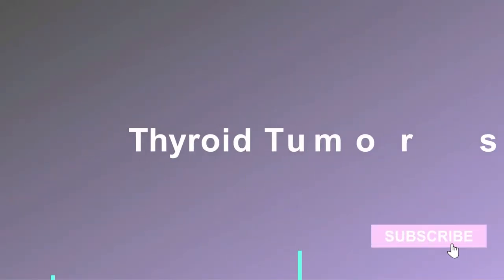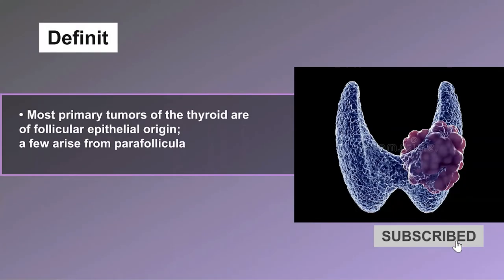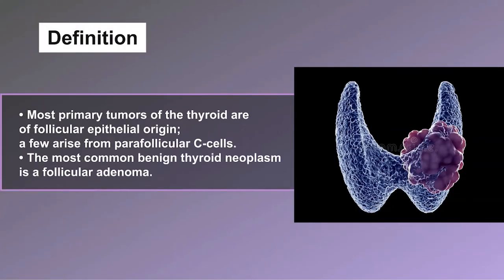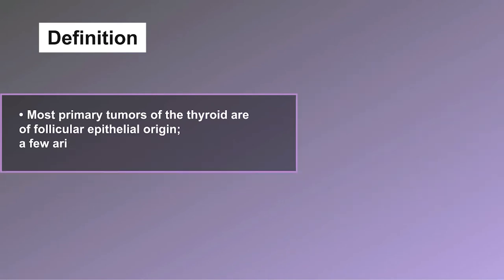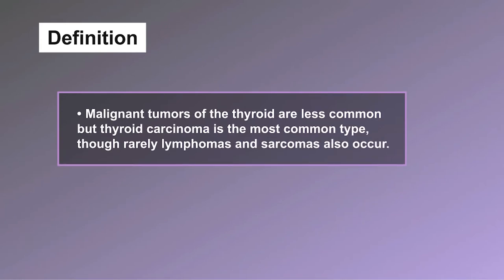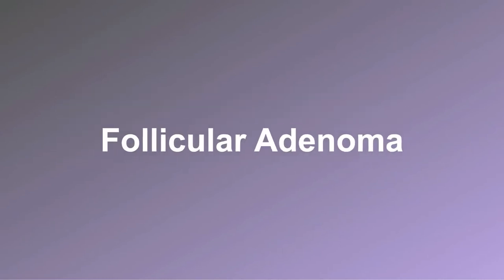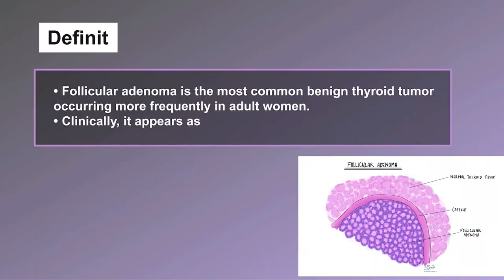Thyroid tumors: definition. Most primary tumors of the thyroid are of follicular epithelial origin; a few arise from parafollicular C-cells. The most common benign thyroid neoplasm is a follicular adenoma. Malignant tumors of the thyroid are less common, but thyroid carcinoma is the most common type, though rarely lymphomas and sarcomas also occur.